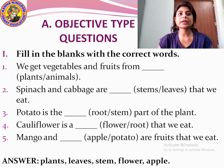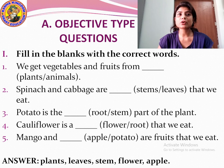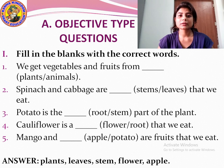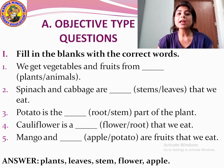Question number three: Potato is the dash — root or stem part of the plant. The answer is stem. Though potato grows under the soil, it is not root — it is the stem part of the plant.